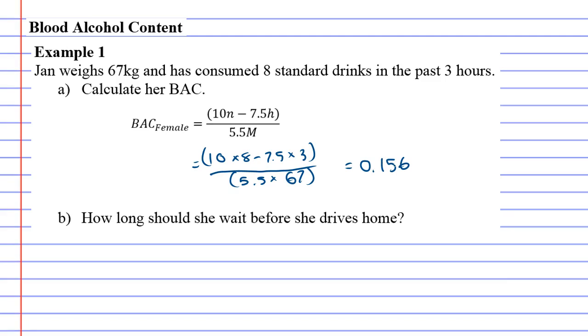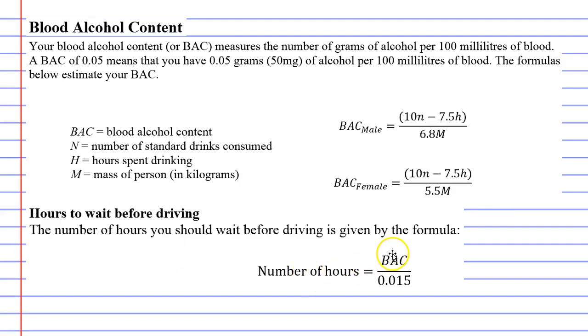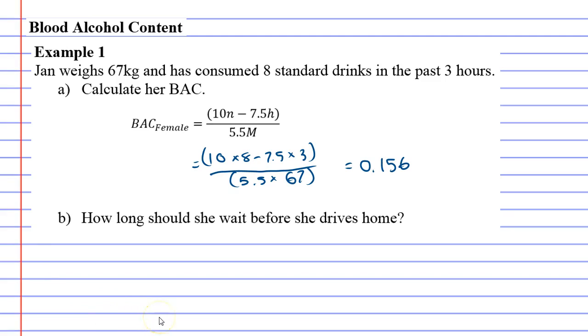I'm going to go back. The formula is BAC over 0.015, that will tell you how many hours. Number of hours is BAC over 0.015.